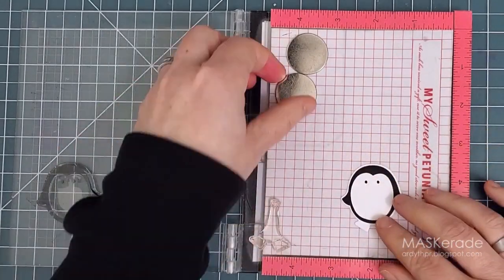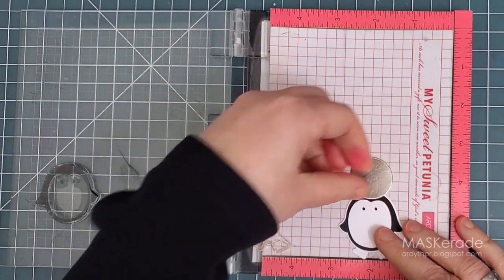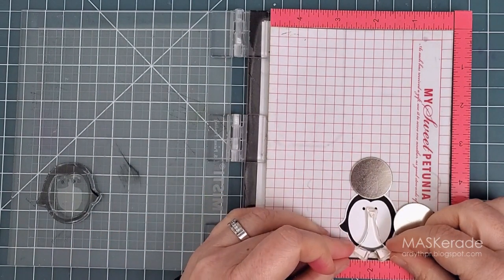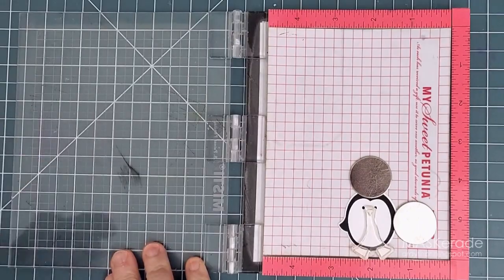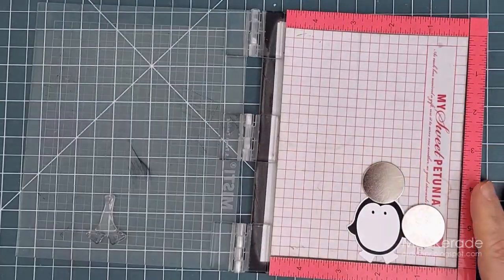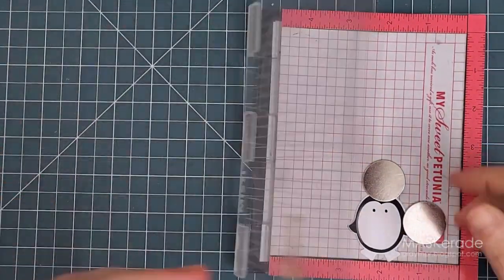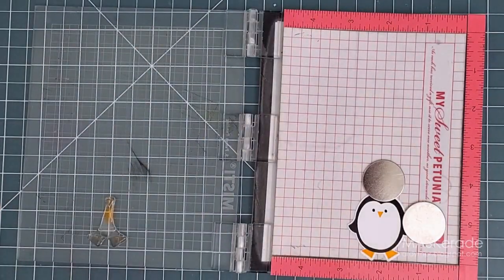Next I die cut the penguin. Each penguin has another stamp with his beak and feet so you can use another color to stamp it, but it's easier to get them in the right place if you're stamping onto the die cut. I used my MISTI again and Tiki Torch ink this time. I think this is a genius design.